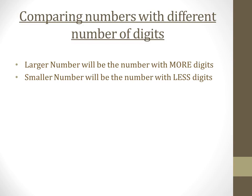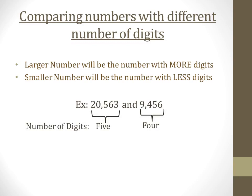Now we will understand this with the help of an example: 20,563 and 9,456. Start counting the digits of both numbers. The first number has five digits and the second number has four digits. Five is greater than four, so the answer is: 20,563 is the greater number and 9,456 is the smaller number. This case is very easy to do.